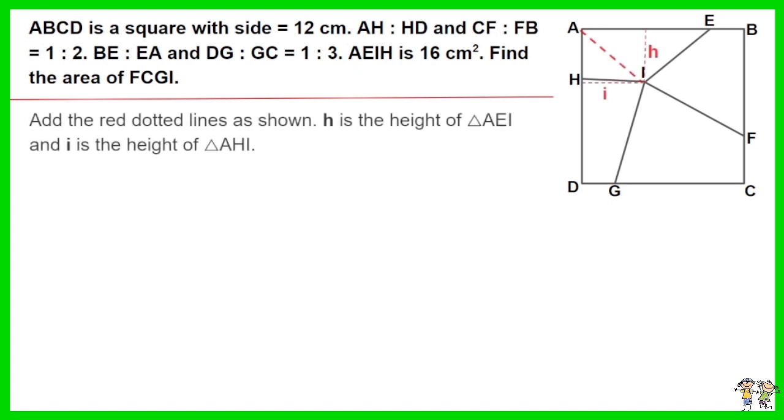Add the red dotted lines as shown. H is the height of triangle AEI and I is the height of triangle AHI.